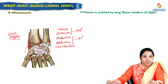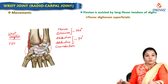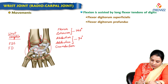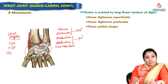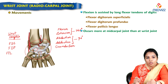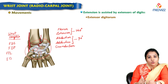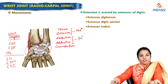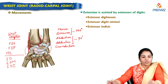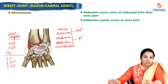Flexion is assisted by the long flexors of the digits: flexor digitorum superficialis, flexor digitorum profundus, and flexor pollicis longus. Flexion occurs more at the midcarpal joint than at the wrist joint. Extension is assisted by the extensors of the wrist: extensor digitorum, extensor digiti minimi (to the little finger), and extensor indicis (to the index finger). Abduction is more at the midcarpal joint than at the wrist joint, while adduction occurs at the wrist joint.